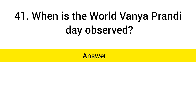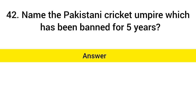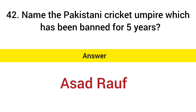When is World Wildlife Day observed? Answer: 6th October. Name the Pakistani cricket umpire who has been banned for five years. Answer: Asad Rauf.